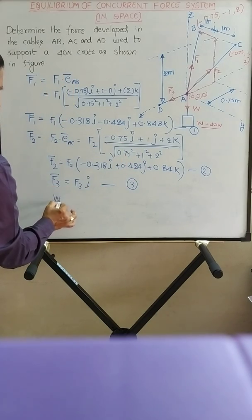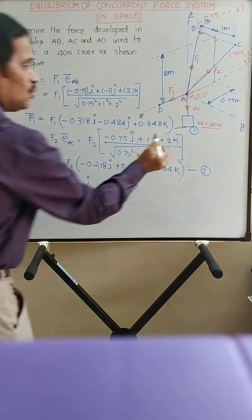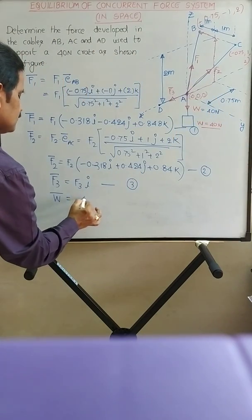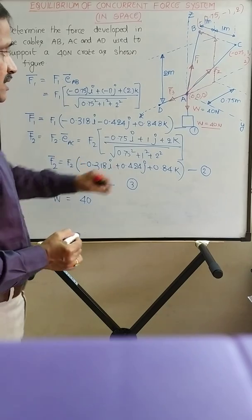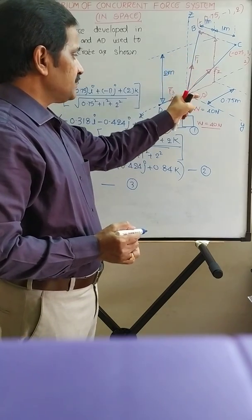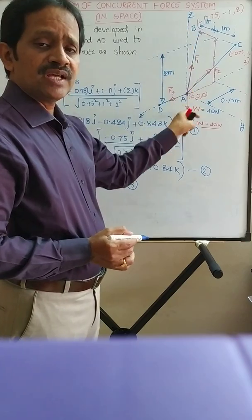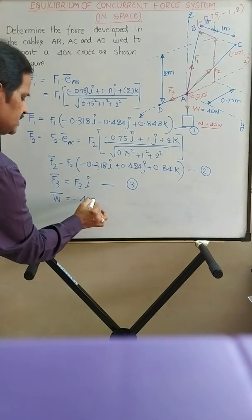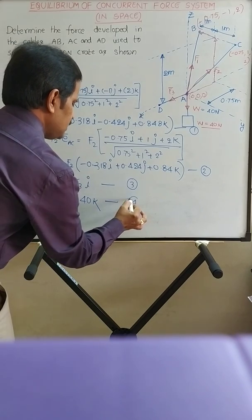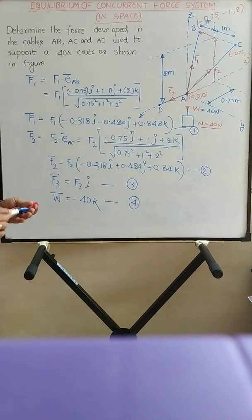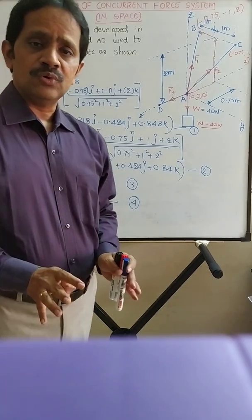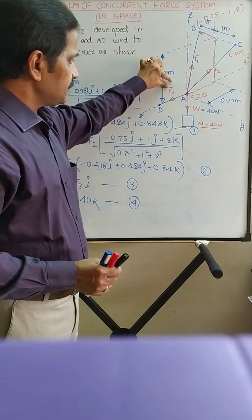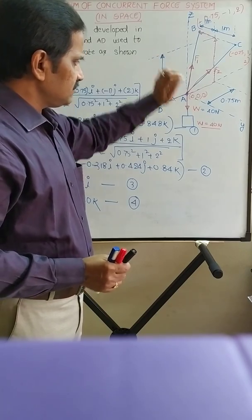Force vector W: the magnitude of W is 40 Newton, and it acts along the negative z-axis, so the unit vector is −K. Therefore, force vector W = 40 × (−K) = −40K. This is equation 4. We have now written the force vectors for F1, F2, F3, and W.